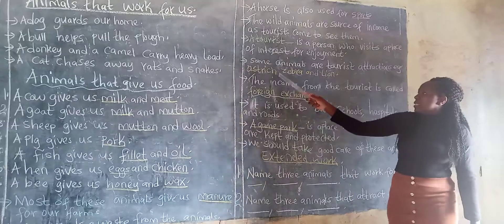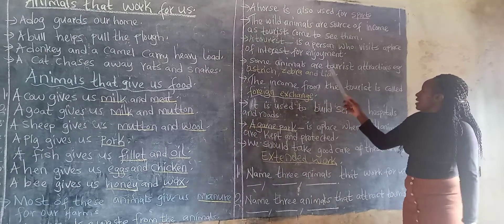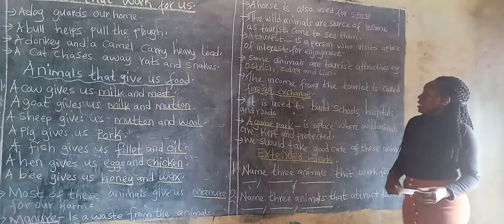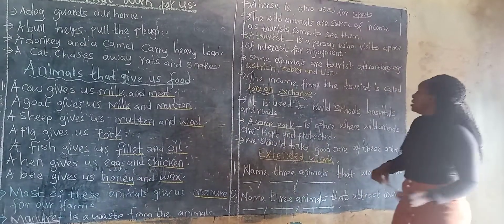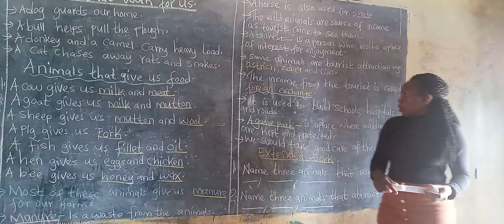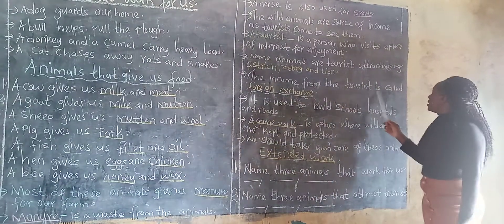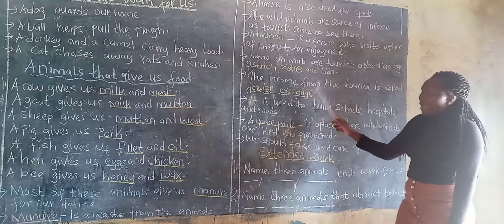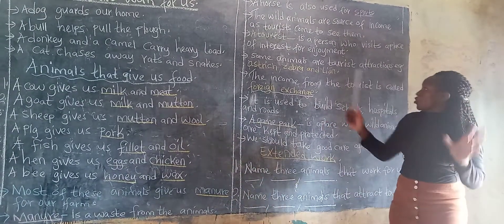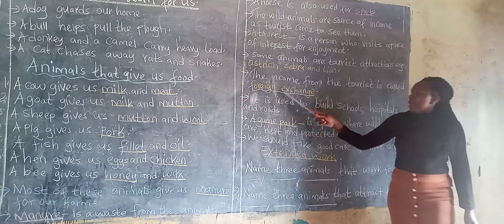Examples of animals that are tourist attractions: we have ostrich, zebra, and lion. So these are the most common animals that attract tourists. And a tourist is a person who visits a place of interest for enjoyment. Now the income from tourists is called foreign exchange — all the money that we get from tourists is what we call foreign exchange.